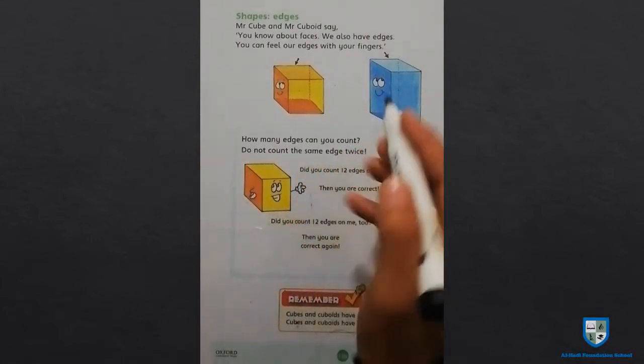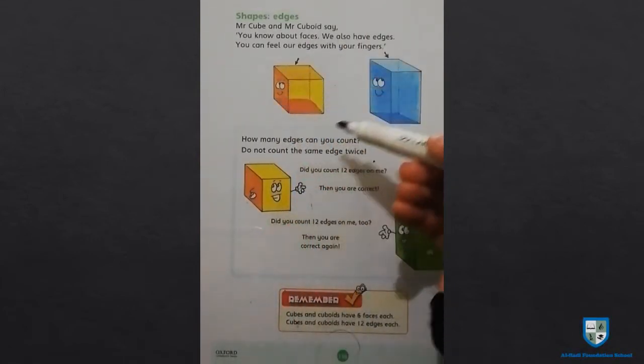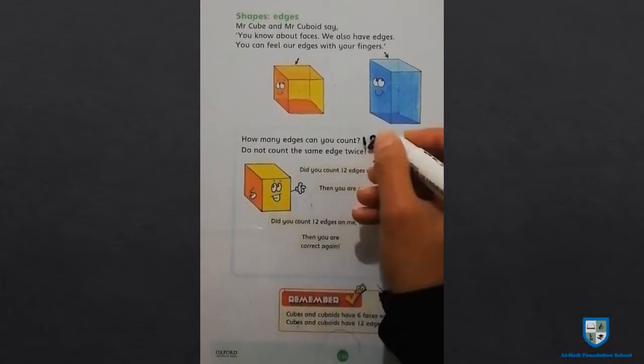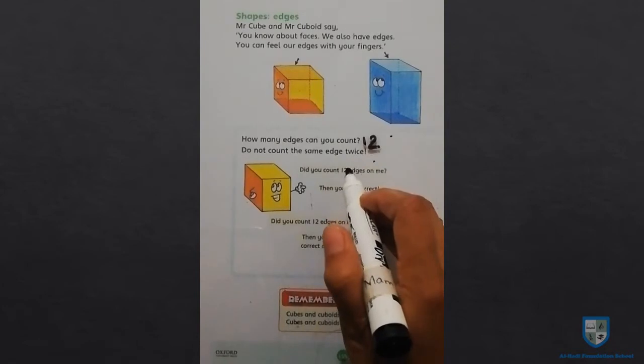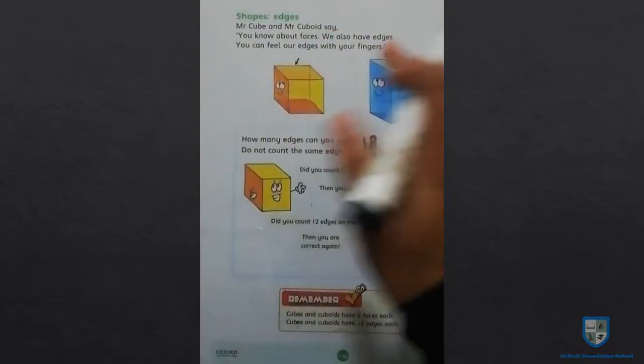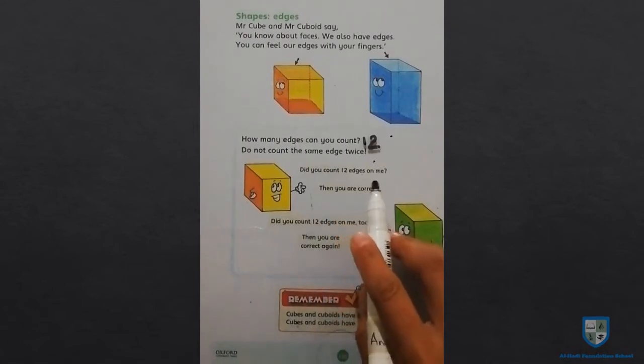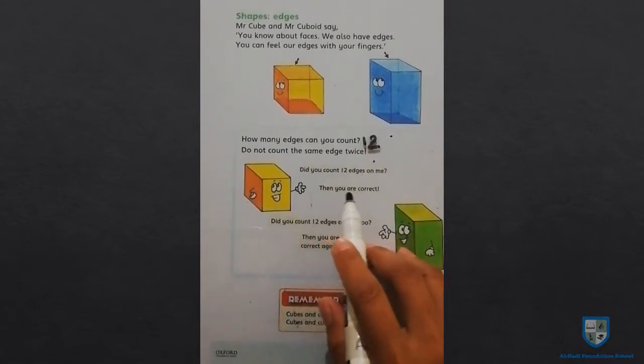How many edges can you count? When we count all edges, the total is 12. Do not count the same edge twice. Did you count 12 edges on me? Then you are correct.